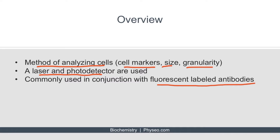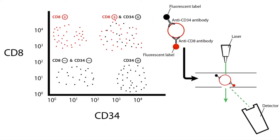Let's pull up a figure so you can see what I'm talking about. This is a figure of flow cytometry which can be found in section 3 of lab techniques. Notice that on the right side the process is illustrated and on the left the results are plotted out on a scatter plot. Let's talk about the process on the right first.